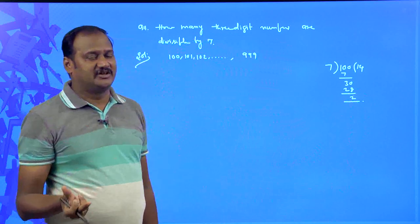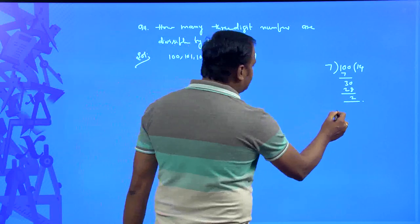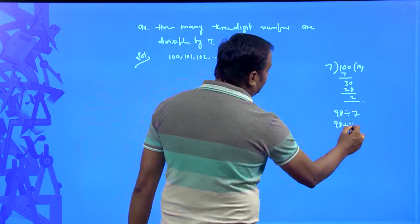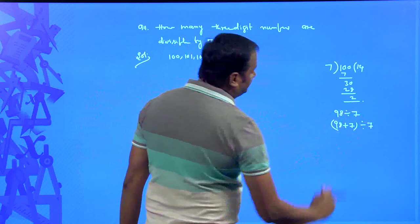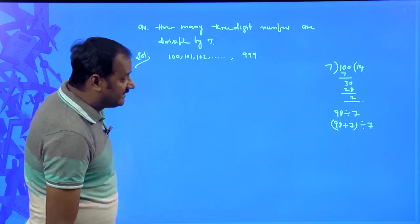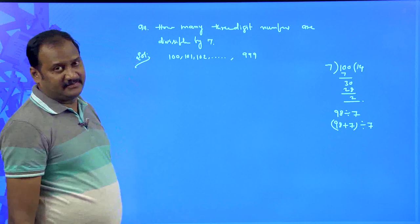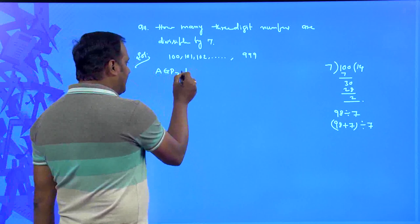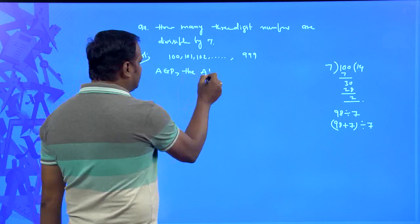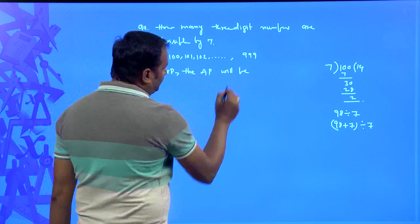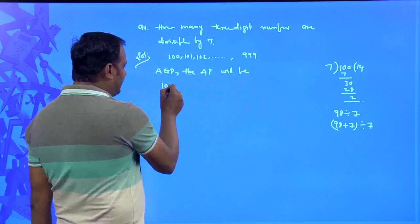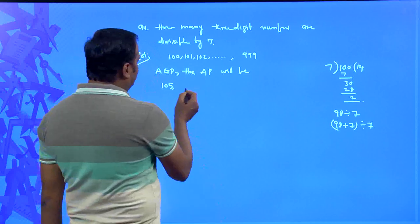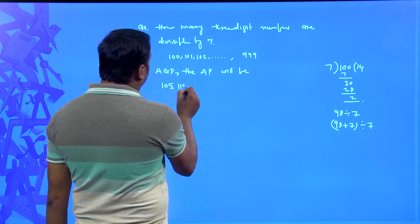So 98 is divisible by 7. Then 98 plus 7, which equals 105, is also divisible by 7. So the very first three-digit number divisible by 7 is 105. The arithmetic progression starts with a = 105, and since each next number is obtained by adding 7, the common difference d = 7. So 105, 112, and so on.